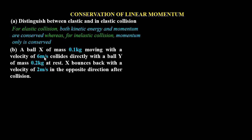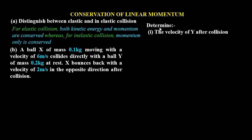For Part B, a ball X of mass 0.1 kilograms moving with a velocity of 6 meters per second collides directly with a ball Y of mass 0.2 kilograms at rest. X bounces back with a velocity of 2 meters per second in the opposite direction after collision. For Roman 1, we need to determine the velocity of Y after collision.